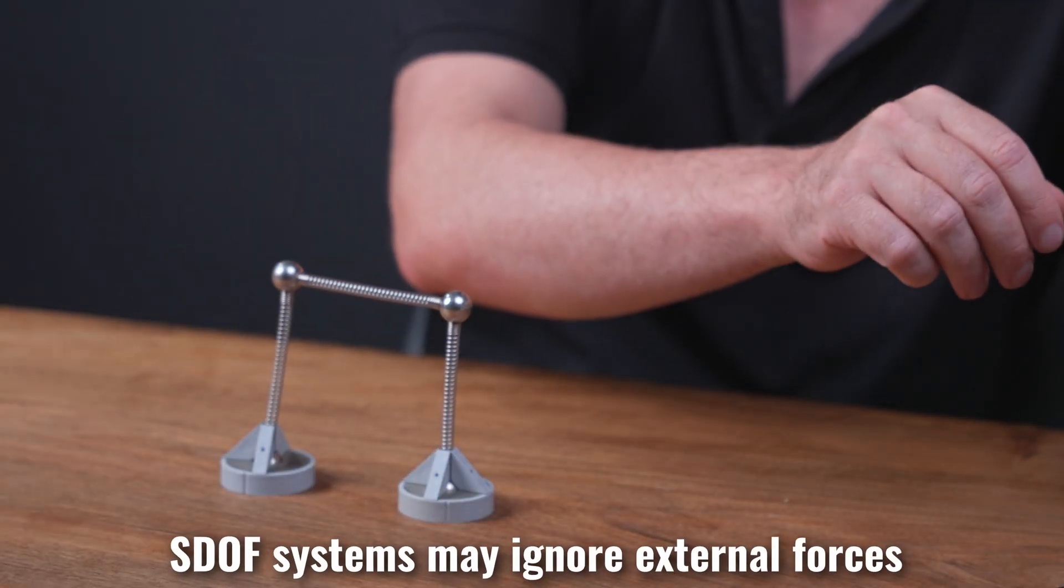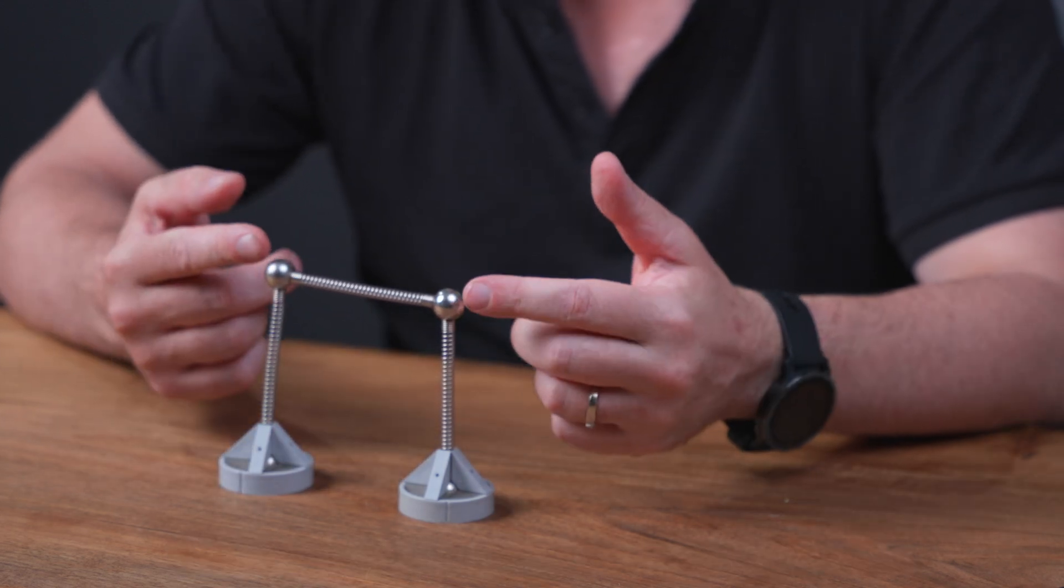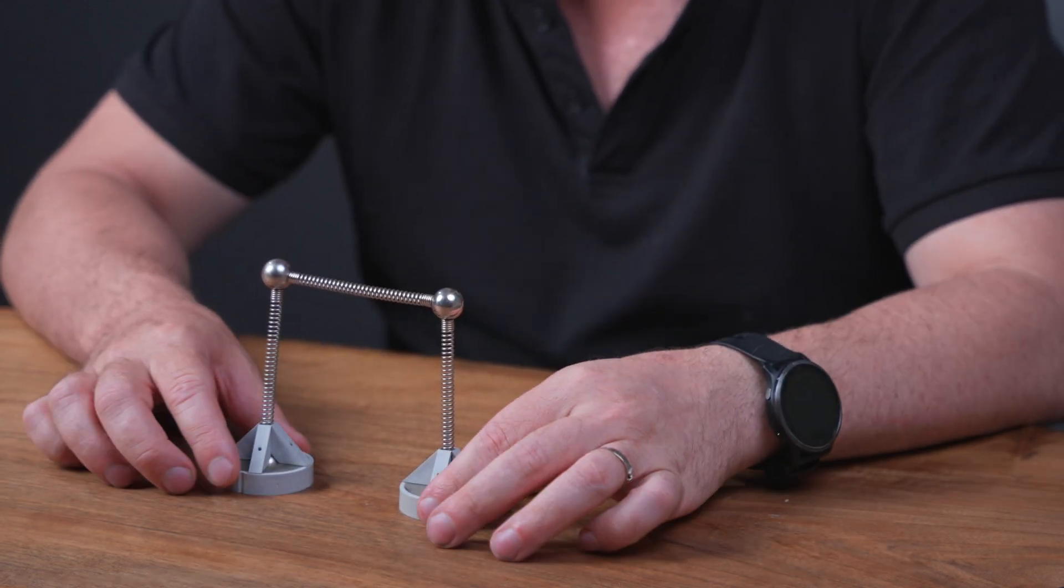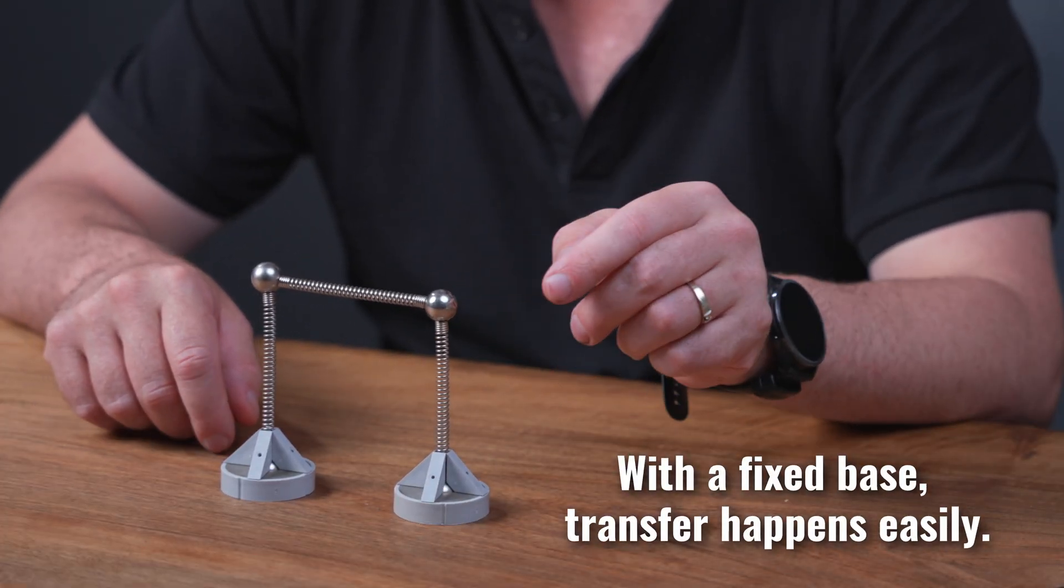So it means sometimes in a single degree of freedom system, those out-of-plane forces will need to be ignored. As you can see, it fell over when I pushed it over. But if we apply a fixed base and did the same, we can see it transfers quite readily.